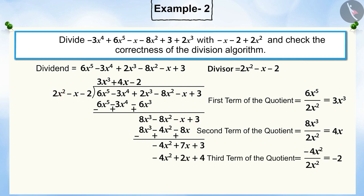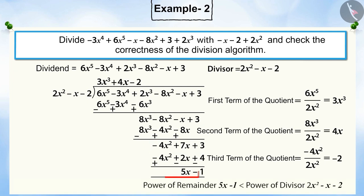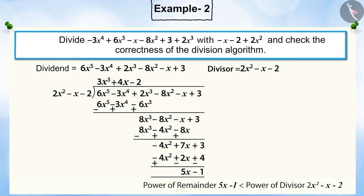Now, perform the division process with the remaining terms, minus 4x squared plus 7x plus 3. Now, the power of the remaining terms, 5x minus 1, is less than the degree of the divisor. Therefore, we cannot proceed with the process of division. After the division process, we get 3x cubed plus 4x minus 2 as the quotient and 5x minus 1 as the remainder.